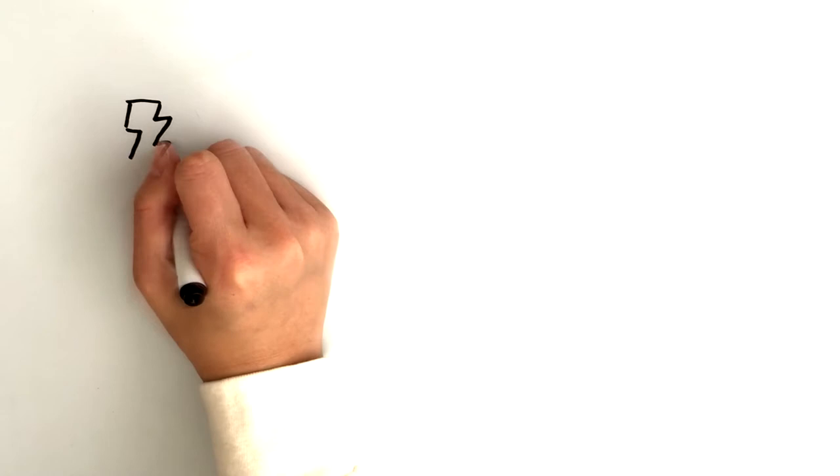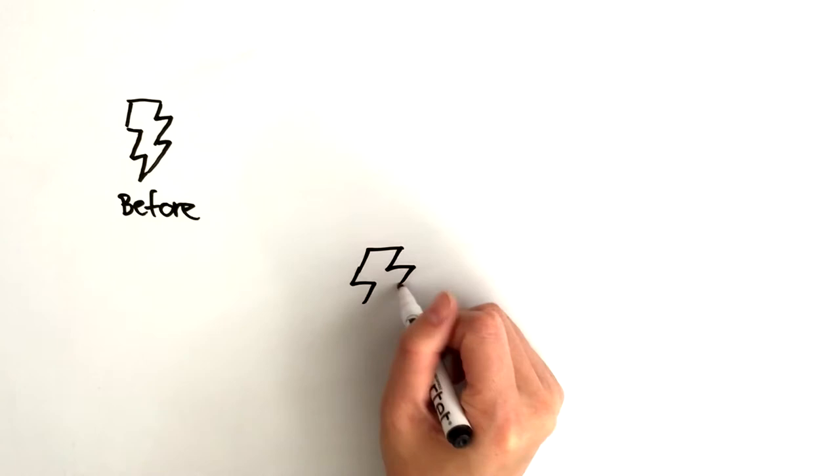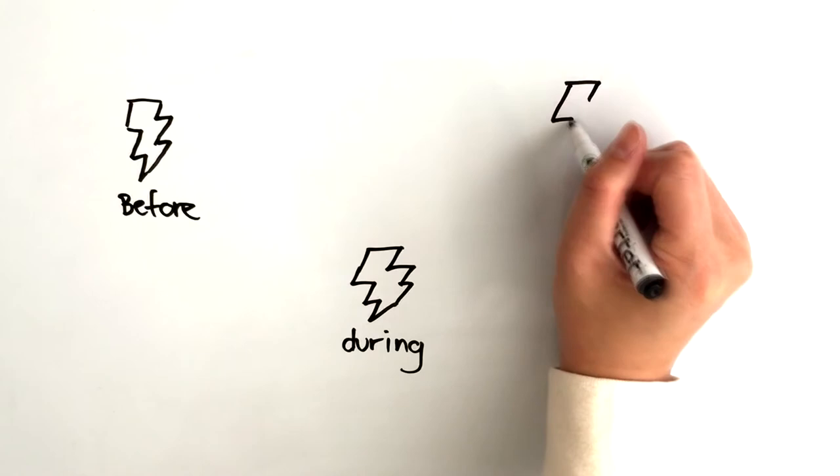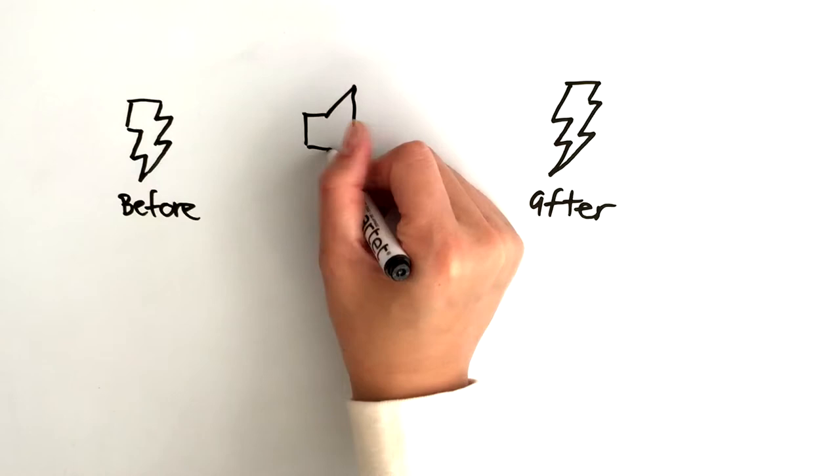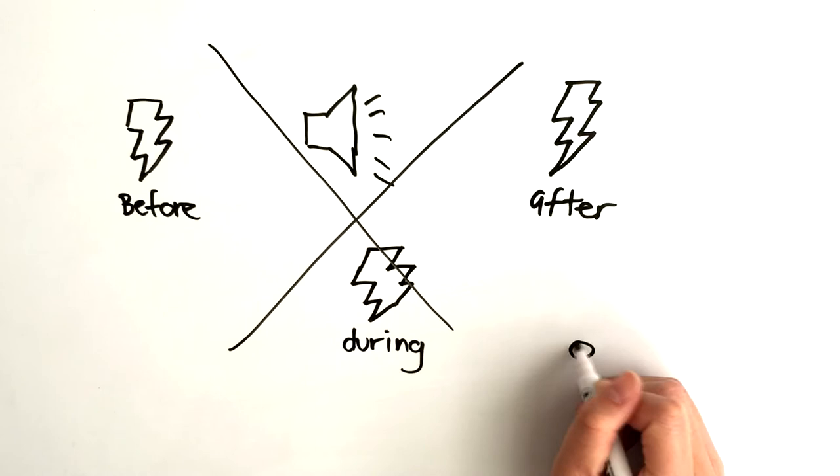One might think that a repeated presentation of the unconditioned stimulus before, during, and after the conditioned stimulus would produce a higher rate of learning. But research has disproven this and shown that this type of model induces a sort of confusion in the organism. The organism is not able to form a clear association between the conditioned stimulus and the unconditioned stimulus.